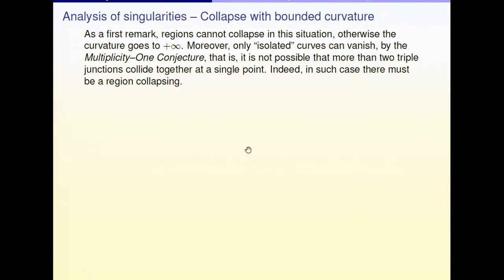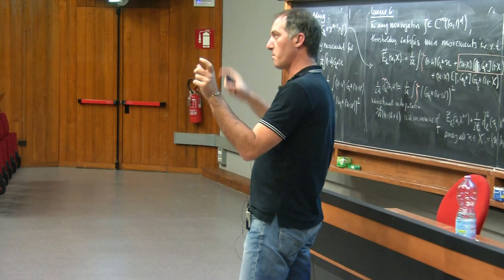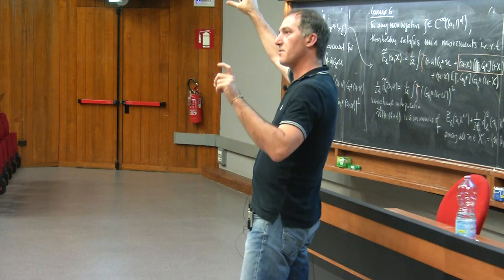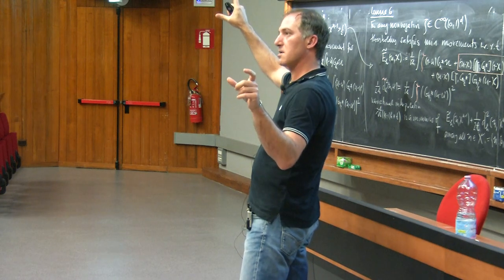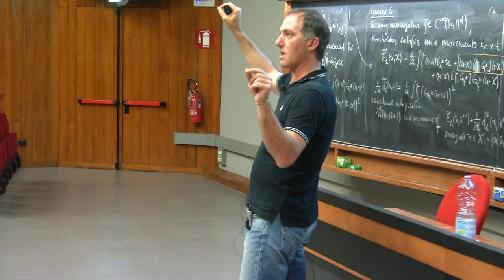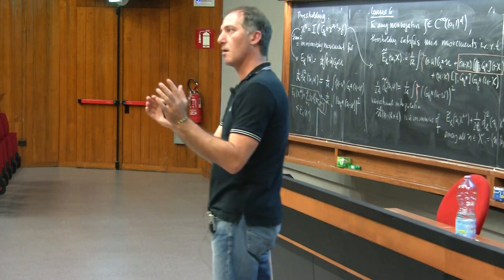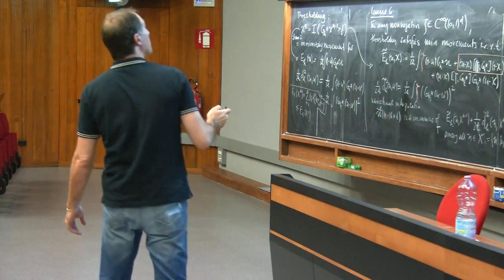So it's the other case that I'm going to discuss. In this case, a region cannot collapse. By the argument I showed you yesterday, that means only an isolated single curve of your network is collapsing down, not other closed curves. It could be that at the same time, in different areas of your network, some curves are collapsing simultaneously — but locally, only one single curve.